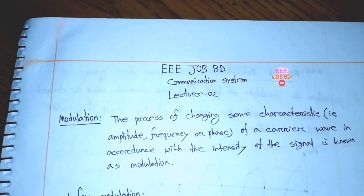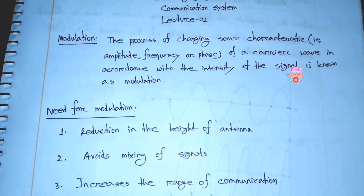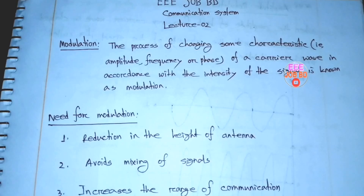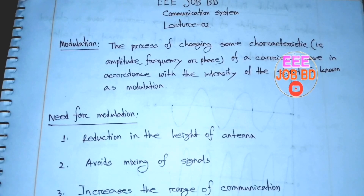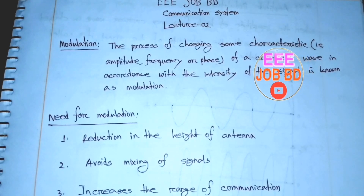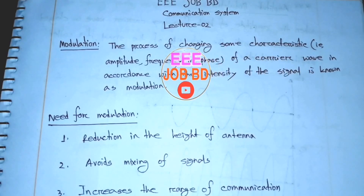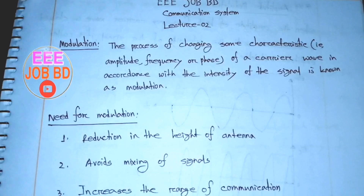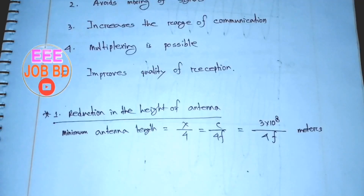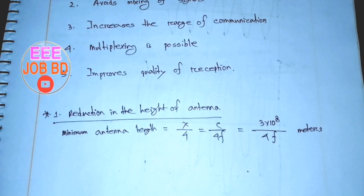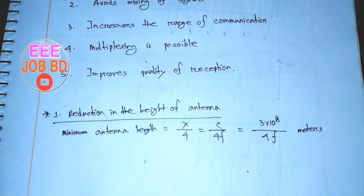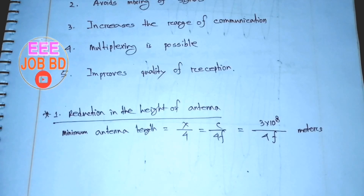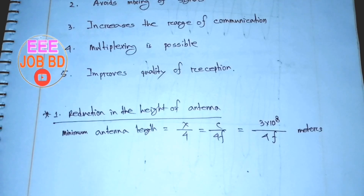One reason for modulation is the reduction in the height of the antenna. The minimum antenna height is lambda by 4, and since lambda equals c divided by f, the minimum antenna height is c divided by 4f, where c is the speed of light: 3 × 10⁸ meters per second.